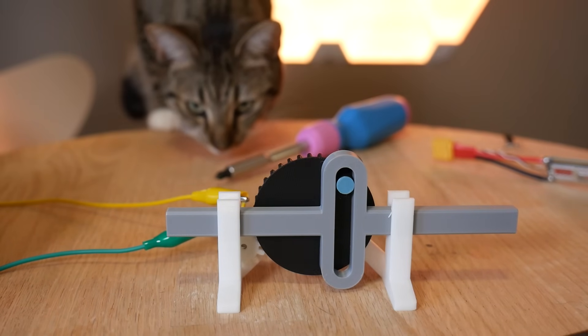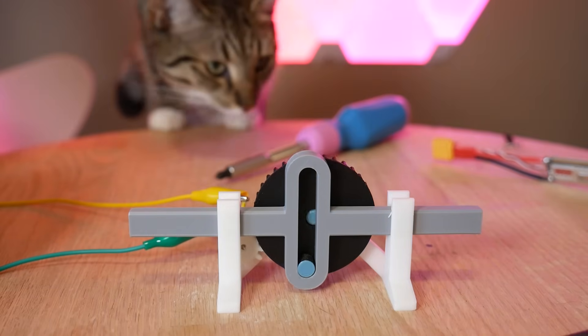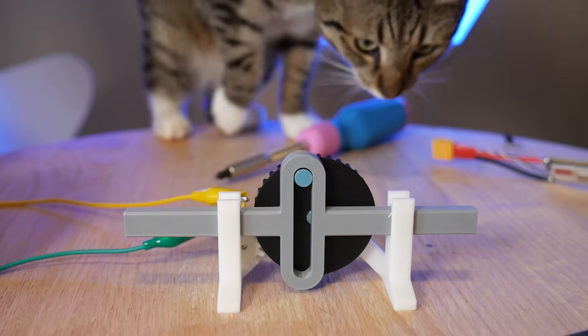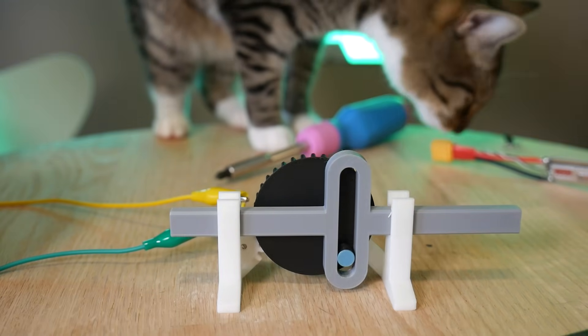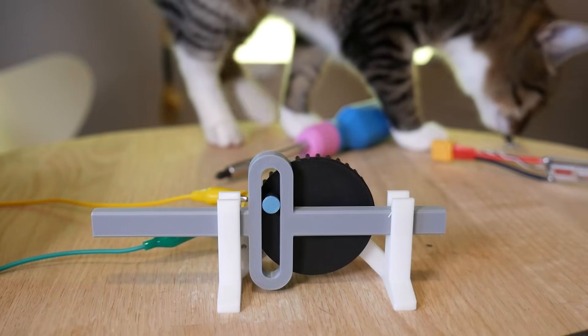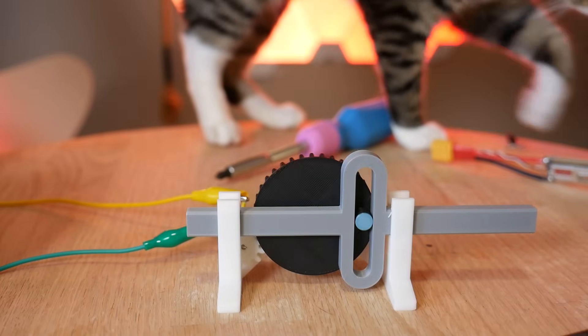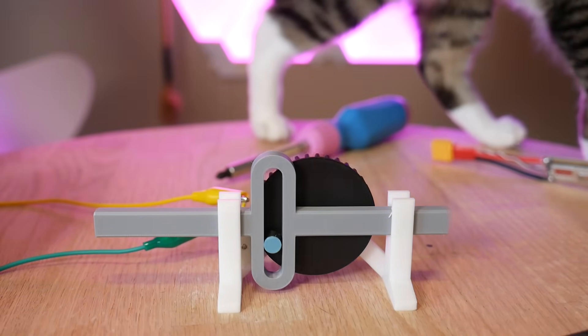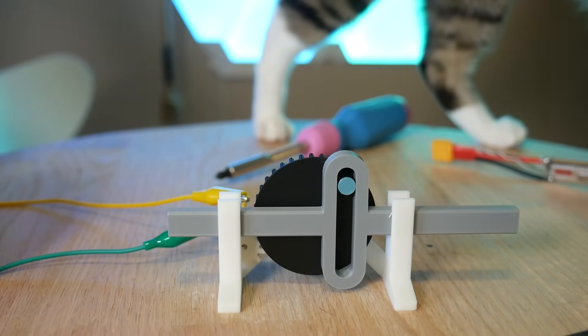And this, the Scotch yoke, was one such invention. It constrains a rotating element by way of a pin within a slot which slides back and forth. When driven by the rotating side, as in this example, it creates smooth reciprocating linear movement at the output.